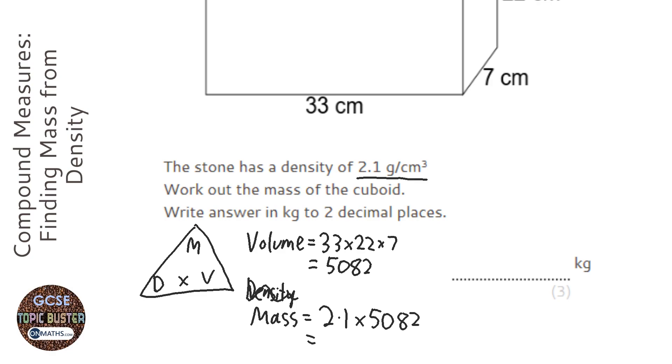So 2.1 times 5082, and I get 10672.2. Now check the unit of mass in the density: it's grams per centimeter cubed, so that's going to be grams. Now be careful because the answer is wanted in kilograms, so I'm going to divide that by a thousand to get it in kilograms.